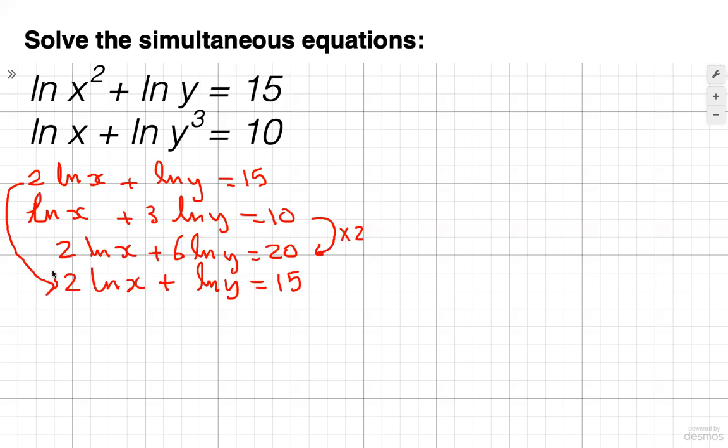At this stage, we subtract these two equations. We do that because we know if we subtract, that's going to cancel. 6 ln y minus 1 ln y is going to give me 5 ln y equals 20 minus 15, which gives me 5.